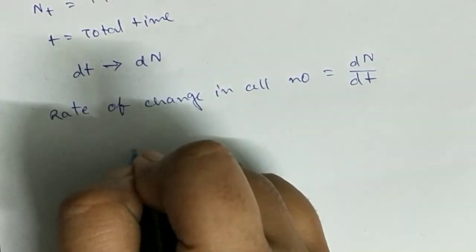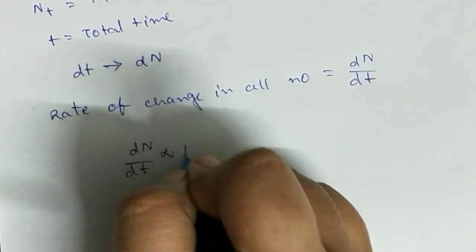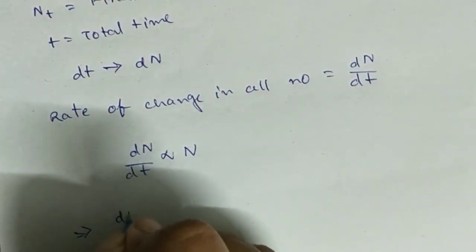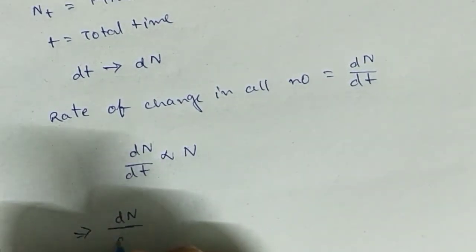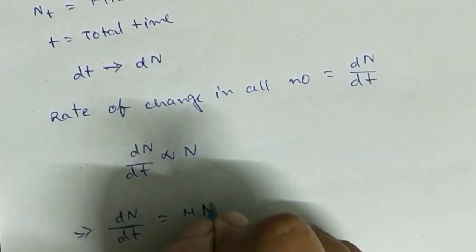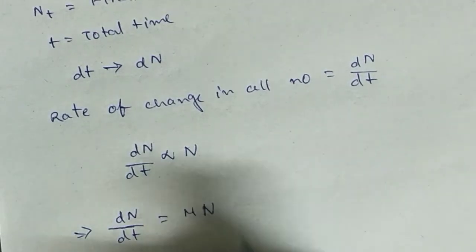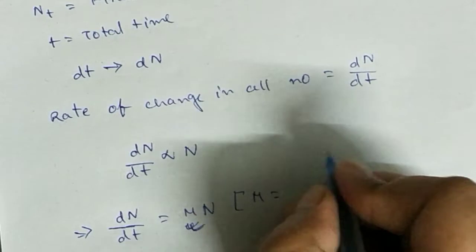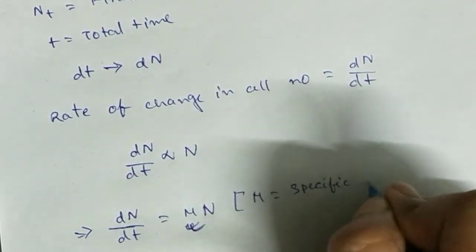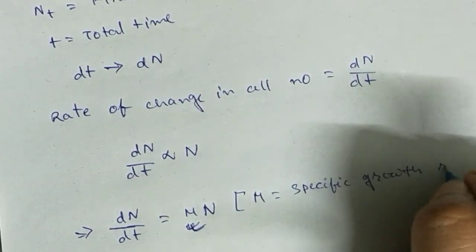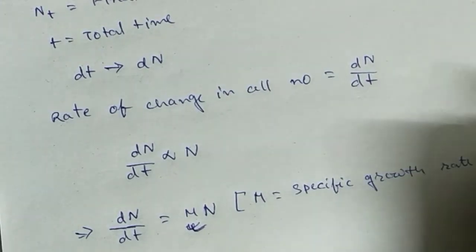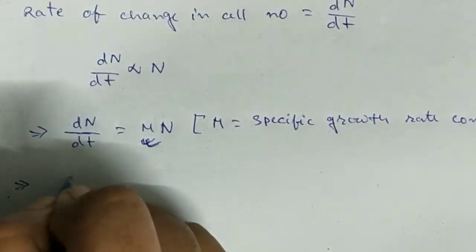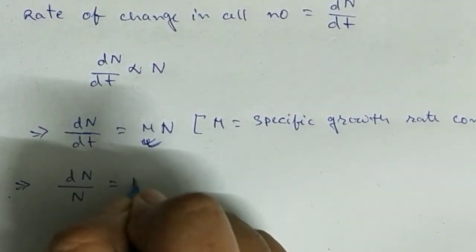We can write dN/dt as proportional to N, where N is the final number of cells. Removing the proportional-to sign and replacing it with an equals sign, we introduce a constant mu. This constant mu is known as the specific growth rate constant. Cross-multiplying, we write it as dN/N = mu × dt.